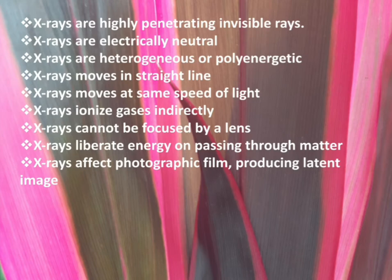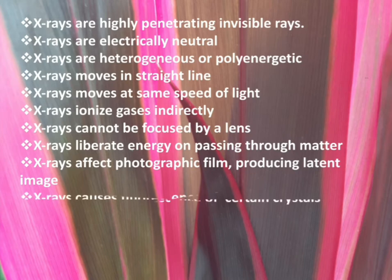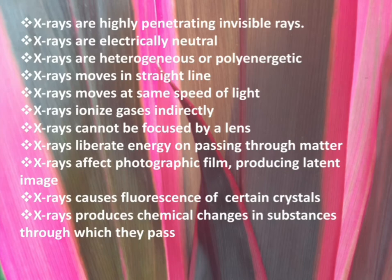In present-day settings we use intensifying screens, which can be read using CR devices. The latent image is an image produced in the photographic film when an X-ray exposure is made. This latent image has to be developed using certain chemicals, after which it can be converted into a final image visible to the naked eye. Another property is that X-rays cause fluorescence of certain crystals.